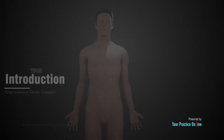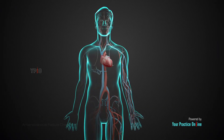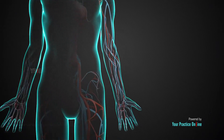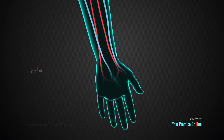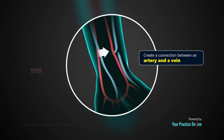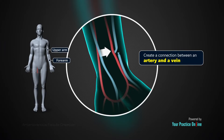An arteriovenous fistula creation is a surgical procedure performed by a vascular surgeon to create a connection between an artery and a vein. The fistula is usually placed on the forearm or upper arm. However, it may also be placed on the leg.